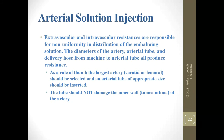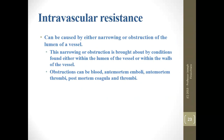Extravascular and intravascular resistances are responsible for non-uniformity in distribution. The diameter of the artery, the arterial tube, and the delivery hose all produce resistance. As a rule, the largest artery — carotid or femoral — should be selected and an arterial tube of appropriate size inserted without damaging the tunica intima. Intravascular resistance can be caused by obstructions or narrowing of the lumen, brought about by conditions such as emboli, ante-mortem thrombi, coagula, and arterial sclerosis.